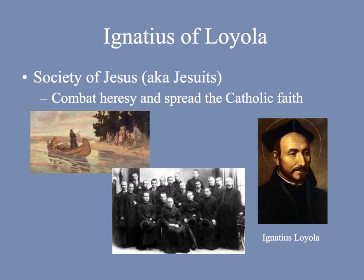In 1540, the Pope decided to recognize a new religious order called the Society of Jesus, also known as the Jesuits. This group was founded by a man named Ignatius of Loyola, who initially was a Spanish knight. After a leg injury, he found comfort in reading about saints who had overcome mental and physical torture. From that point on, he was inspired to become a soldier of God, and he drew up a very strict program for young men. If you became a Jesuit, you focused on spiritual and moral discipline, rigorous religious training, and absolute obedience to the church.